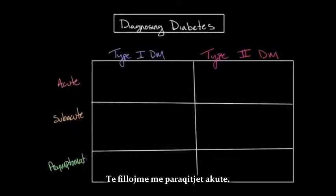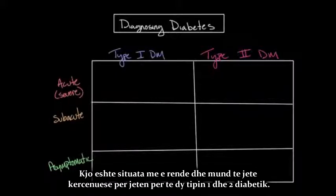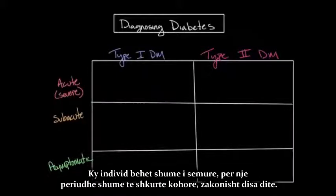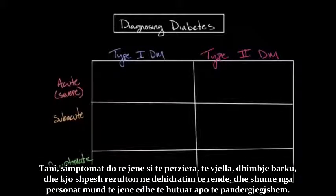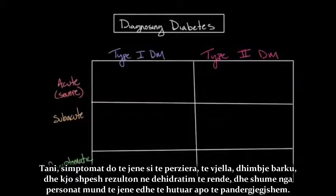The acute presentation is the most severe presenting situation and can be life-threatening for both type one and type two diabetes. This individual becomes very sick over a relatively short period of time, usually only a couple of days. Symptoms will include nausea, vomiting, and abdominal pain, often resulting in severe dehydration, and the individual may even become confused or unconscious.